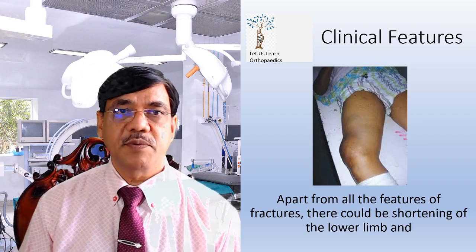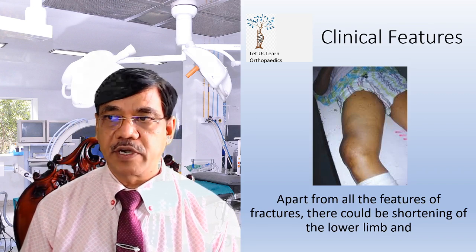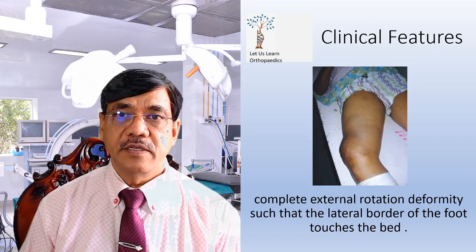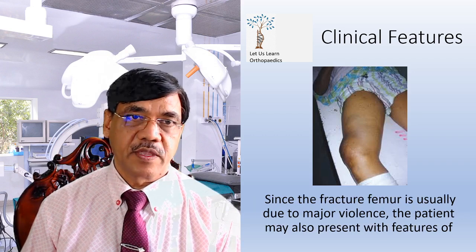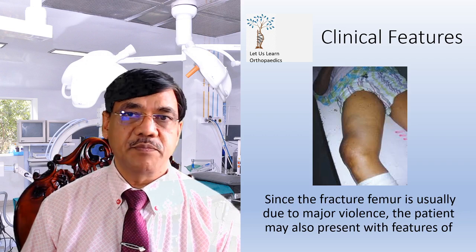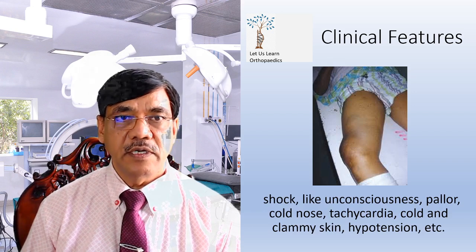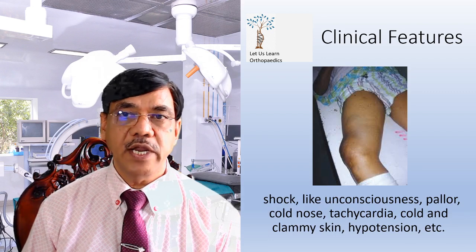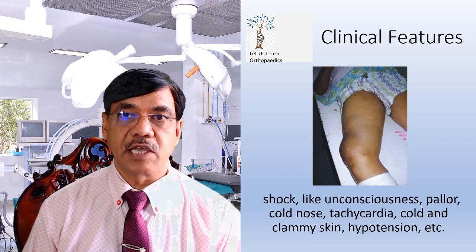Coming to the clinical features, apart from the general features of fracture, there could be shortening of the lower limb and deformity. Complete external rotation deformity may occur such that the lateral border of the foot touches the bed. Since fractured femur is usually due to major violence, the patient may also present with features of shock: unconsciousness, pallor, cold nose, tachycardia, cold and clammy skin, and hypotension. We must not forget to look for these.